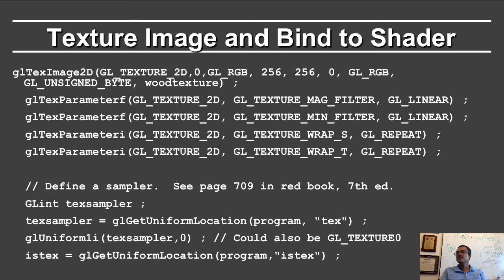In order to use texture maps in the shader, we need to define a sampler. GLGetUniformLocation gets the location from the program of the tex variable, and you initially set it to 0, which corresponds to GL_TEXTURE_0 — this indicates which texture map to look up if we have several. Then we set isTex to the GLGetUniformLocation of the isTex command in the program, and that will be set appropriately.